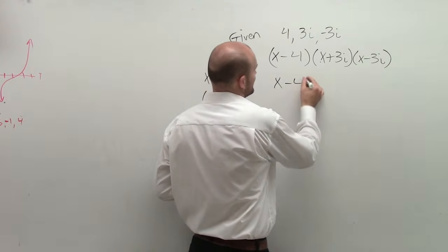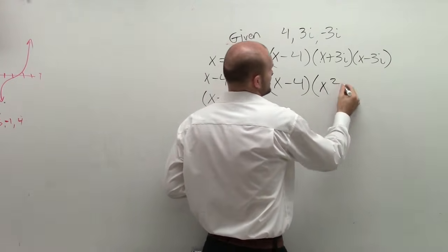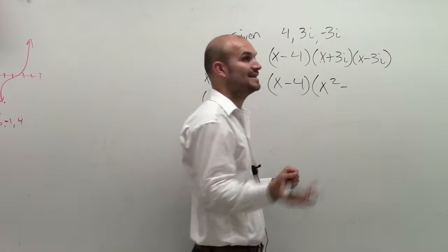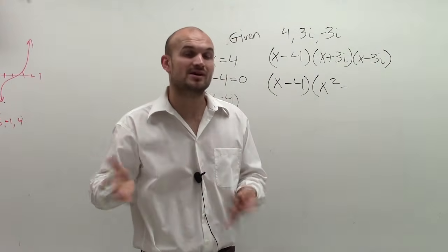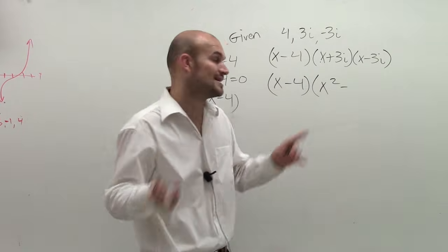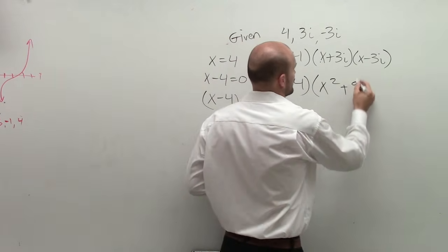We can easily just rewrite this now as x squared minus 3 times negative 3 is negative 9. But then times i squared, i squared is negative 1. Negative 1 times negative 9 is not going to give me positive 9.